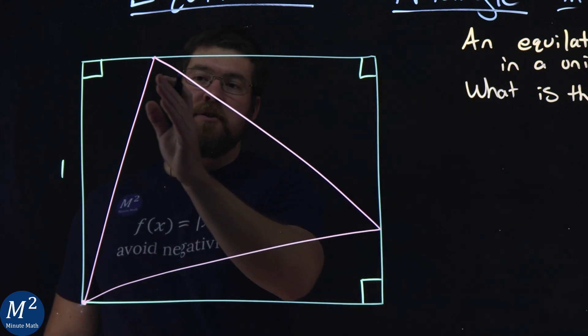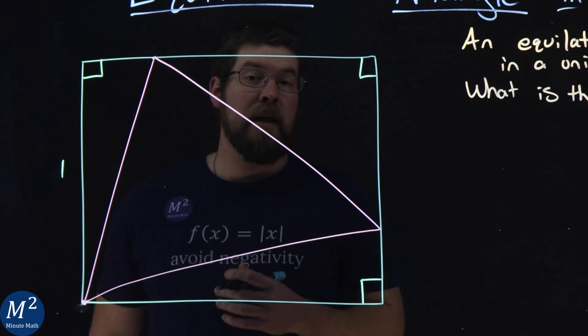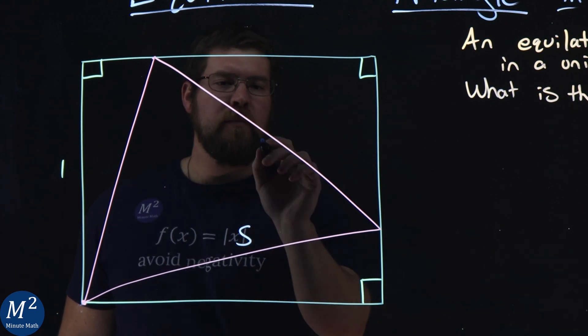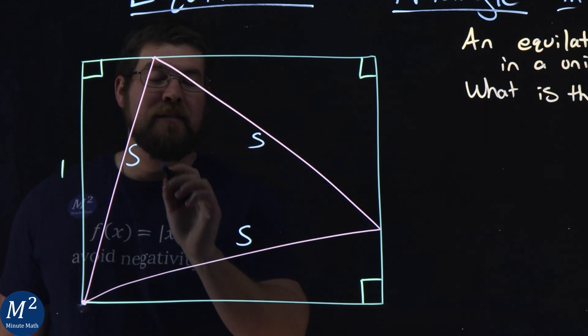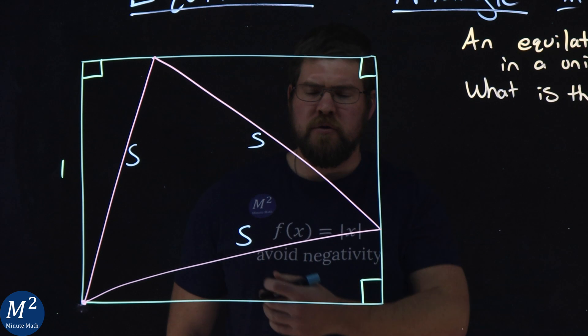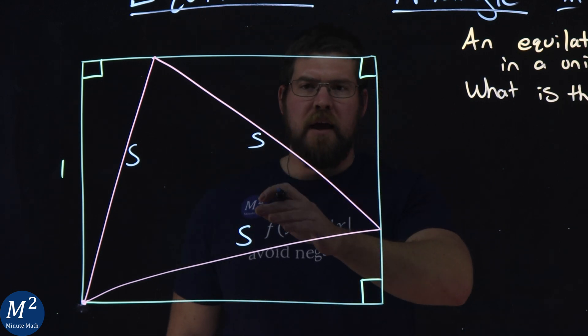Well, first thing, let's go label the side length of each part of this triangle with the letter S. So we have three side lengths that are all the same, being an equilateral triangle there, and we have S, S, and S.